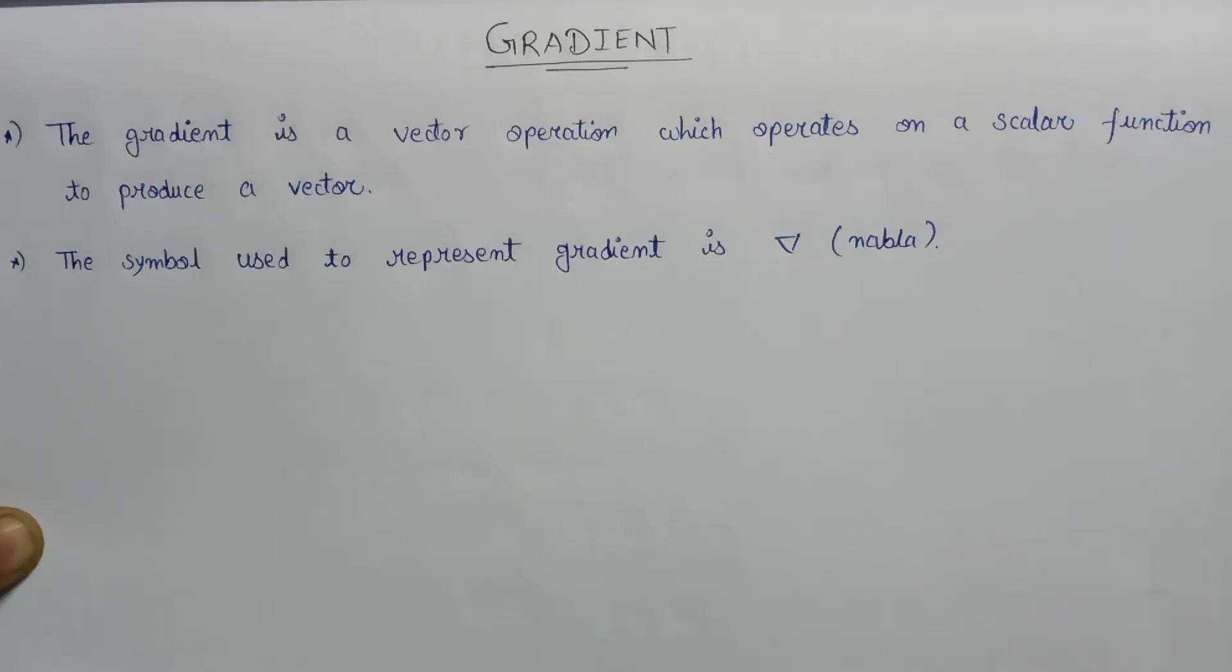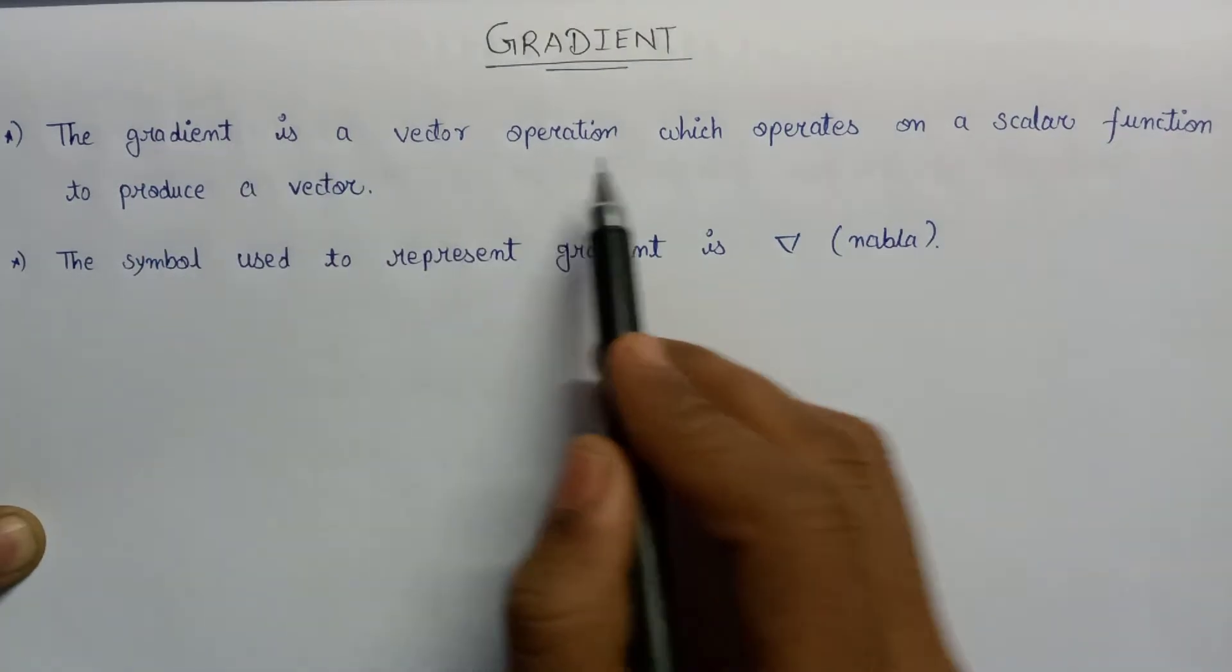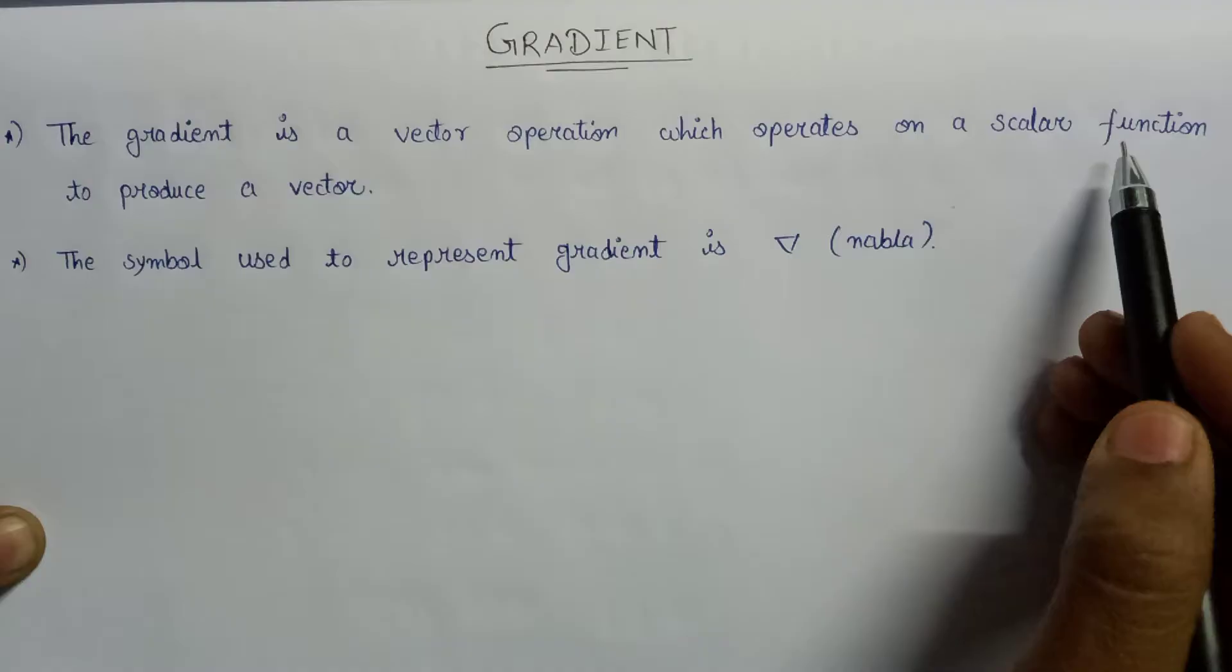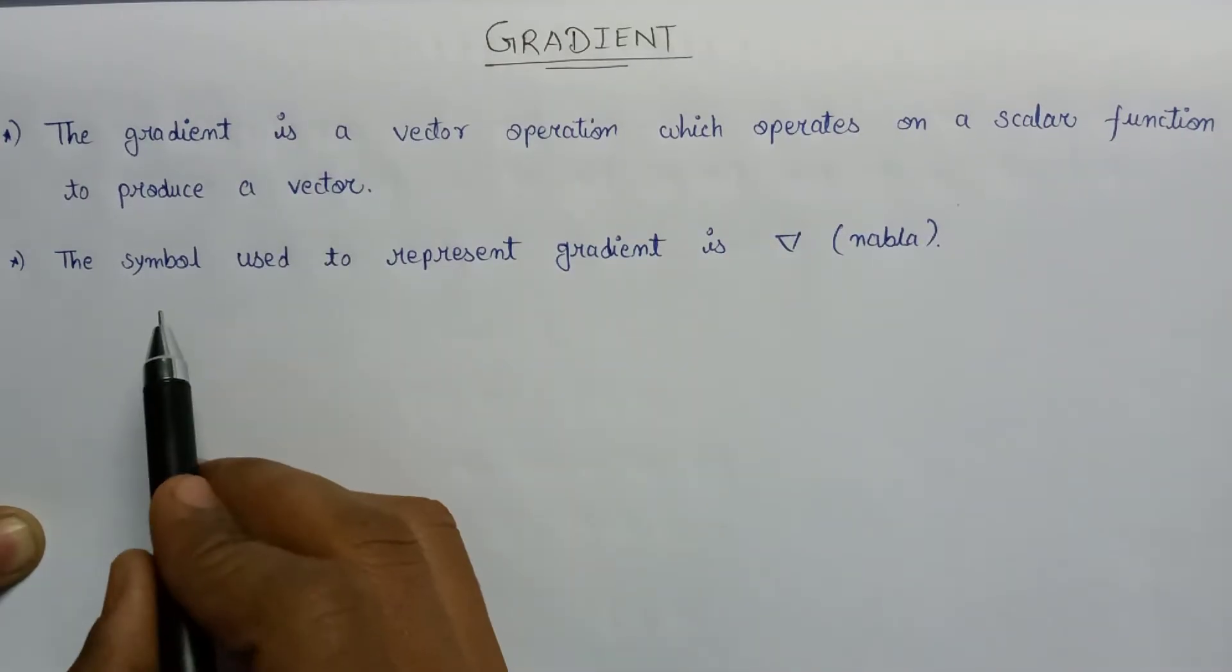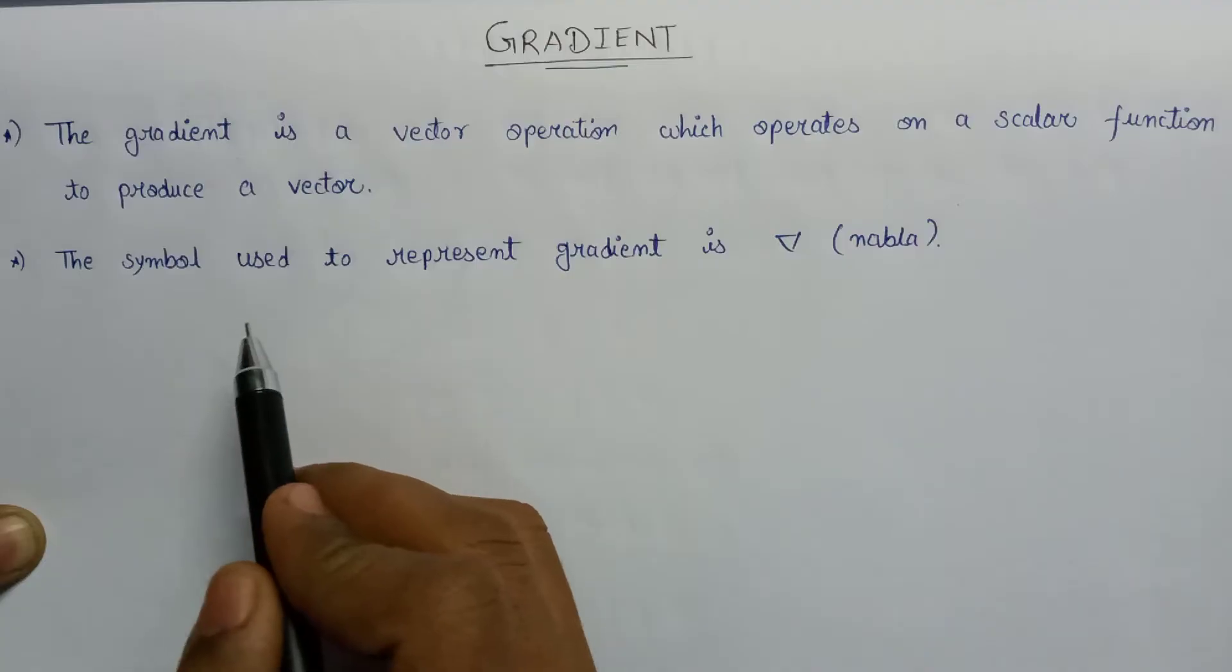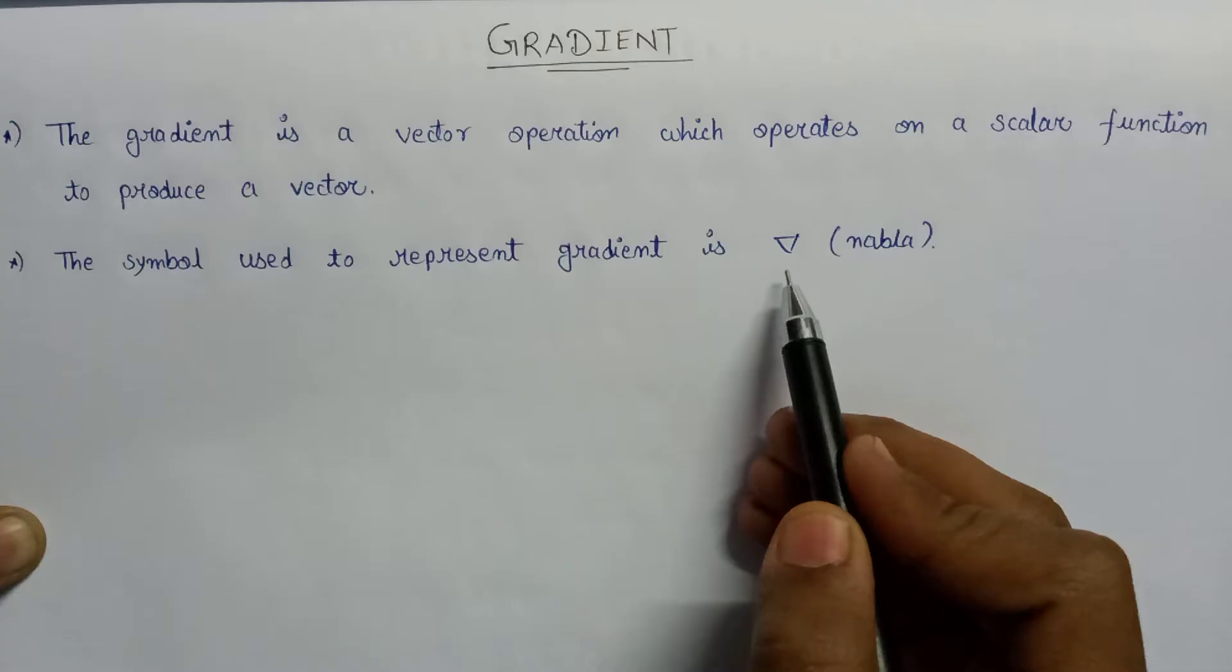Welcome all. In this lecture, we are going to learn about gradient. A gradient is a vector operation which operates on the scalar function to produce a vector. The symbol used to represent a gradient is nabla, or we can say it is del.